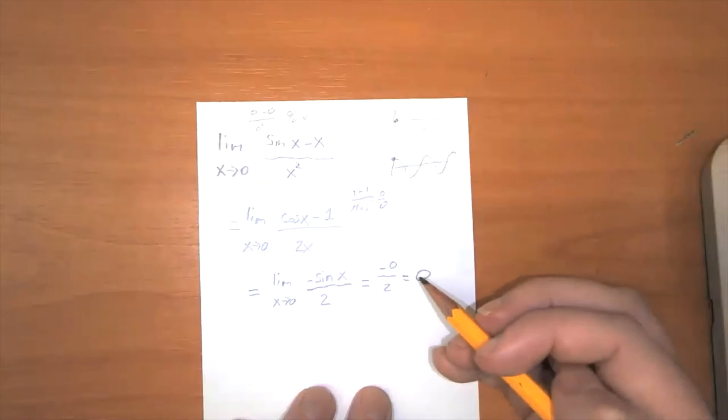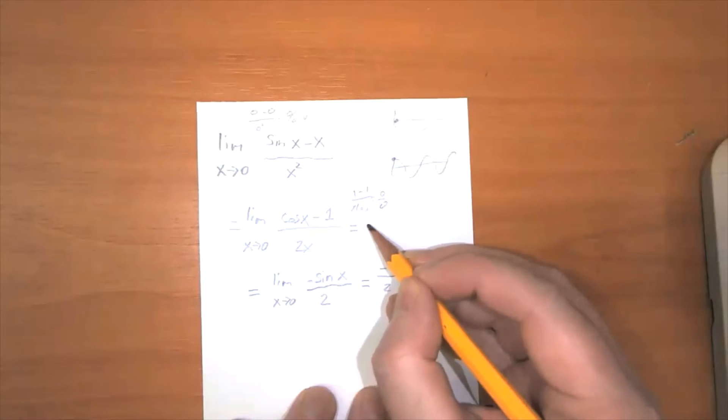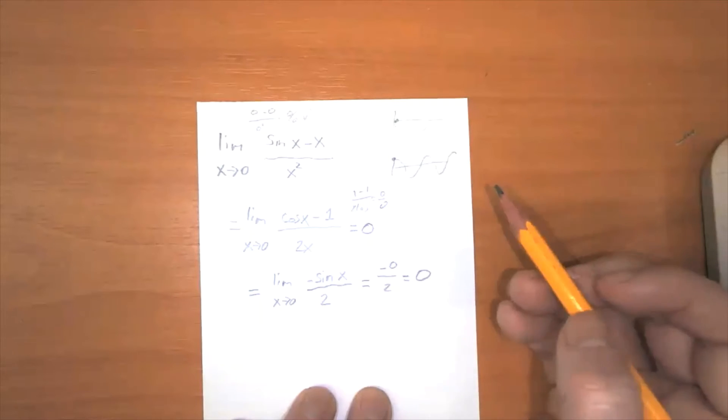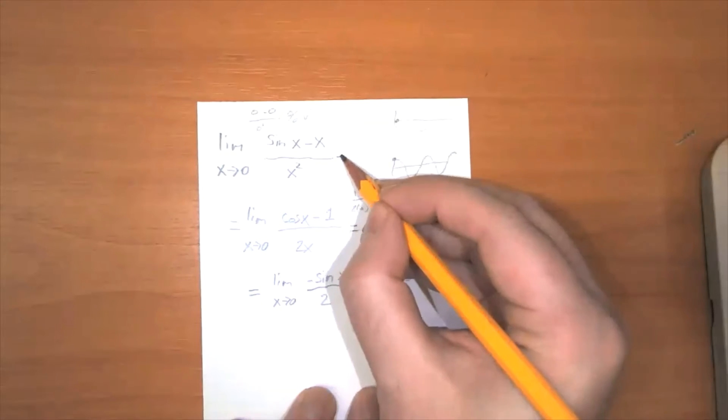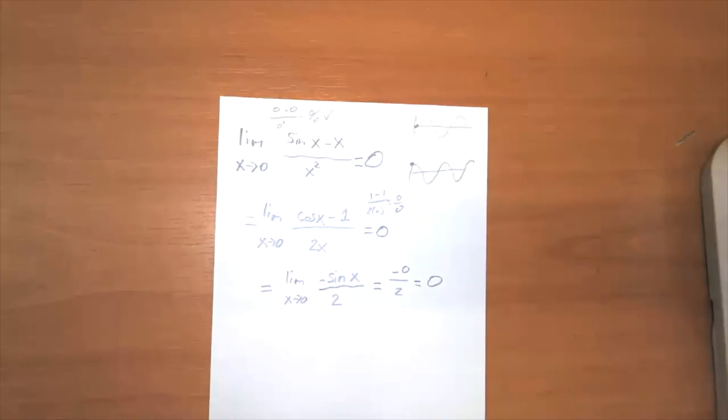So L'Hopital's rule says that since this limit is equal to zero, this limit must also be equal to zero, which means that this limit up here is equal to zero. So this time we needed to apply L'Hopital's rule twice in order to get to something where we could calculate it.